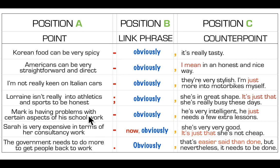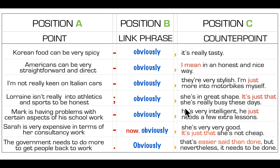'Mark is having problems with certain aspects of his schoolwork.' Note that 'certain aspects of' is the more formal version of 'some of.' 'Obviously he's very intelligent. He just needs a few extra lessons.' Imagine a teacher talking to Mark's parents, conscious that the parents might be sensitive about negative comments about Mark. The teacher very quickly follows up: 'obviously he's very intelligent,' then adds an explanatory phrase: 'he just needs a few extra lessons.' The word 'just' here is an ameliorating spoon of sugar — an additional word showing you're not trying to be negative.